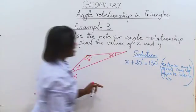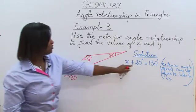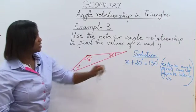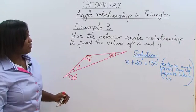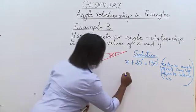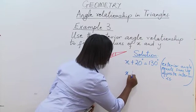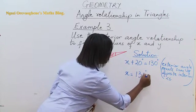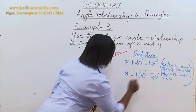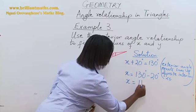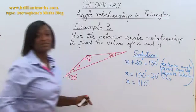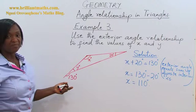So X plus 20 is equal to 130 degrees. Therefore, X is equal to 130 degrees minus 20 degrees. So X is equal to 110 degrees. Easy, right?